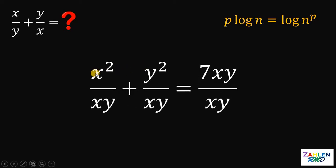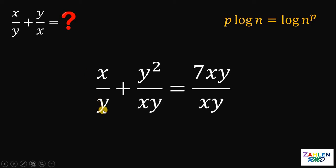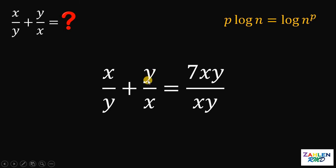Now, take note that we have one factor of x on the numerator and one factor of x on the denominator. So, we can cancel out one factor of x on the numerator and on the denominator. So, this will give us x over y. Do the same thing. We have one factor of y on the numerator and cancel out one factor of y on the denominator. So, this becomes y over x.